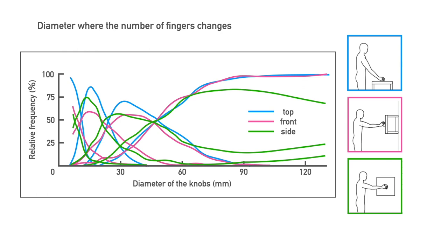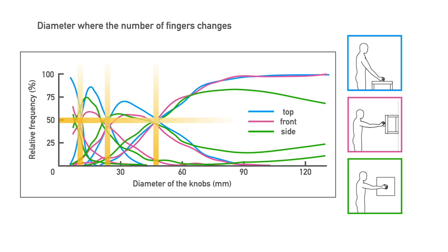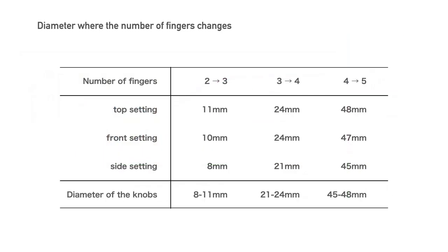This is a layered graph of the three settings. As a result of these three experiments, we found that the transition from using two fingers to three fingers was at 8 to 11 mm. The transition from using three fingers to four fingers was at 21 to 24 mm. The subjects started using five fingers at 45 to 48 mm.